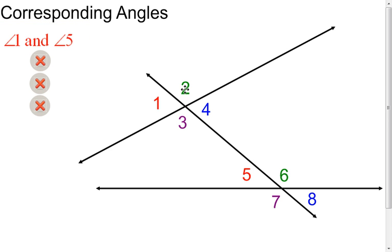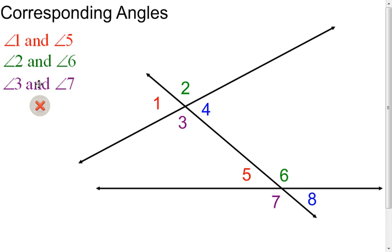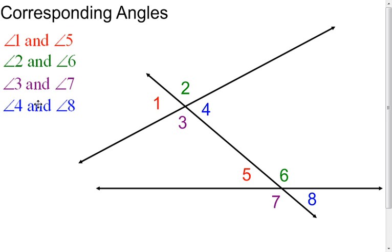Then go to angle two — above the line, to the right of the transversal. The one that's above the line and to the right of the transversal is angle six. Therefore, angle two and angle six are corresponding angles. As you continue through here, you'll find that angle three and angle seven are also corresponding angles, and angle four and angle eight are corresponding angles.